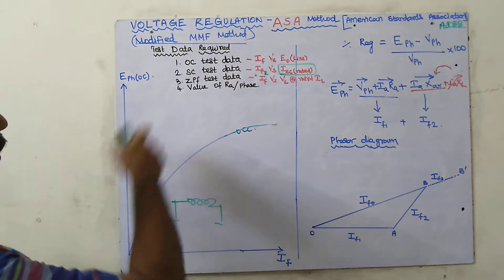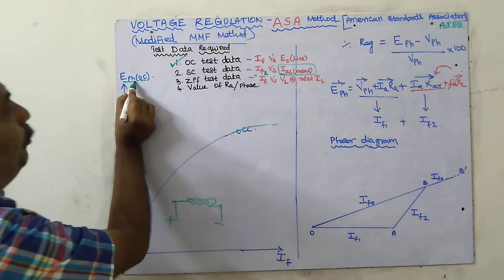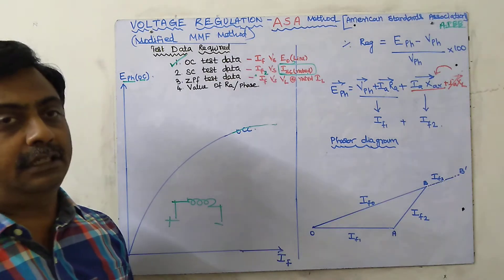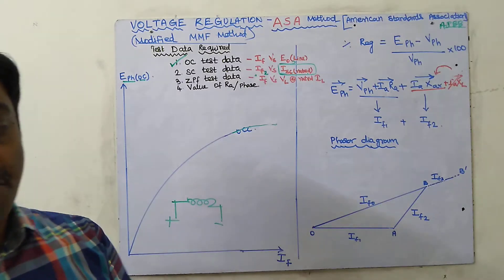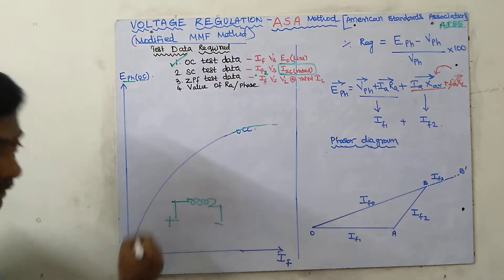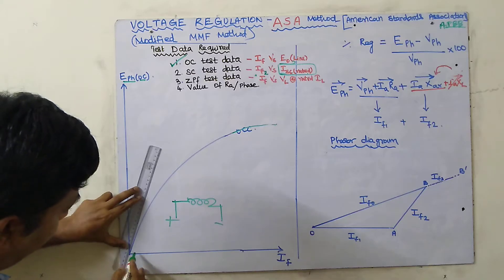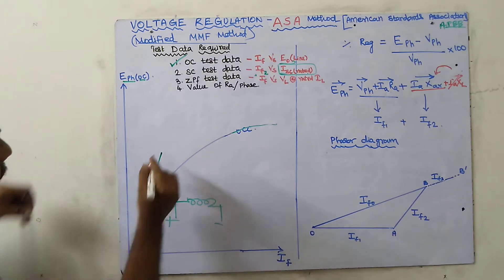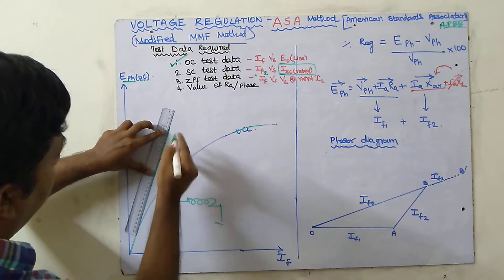First, using the OC test data, we draw the OCC curve: x-axis is field current, y-axis is open circuit voltage in phase value. After drawing the OCC curve, we draw the air gap line — a straight line tangent to the linear region of the OCC. This air gap line is very important for the ASA method.